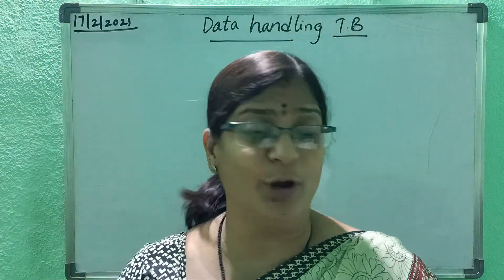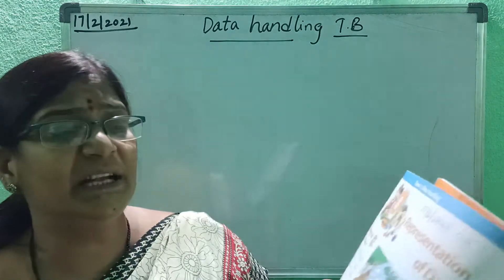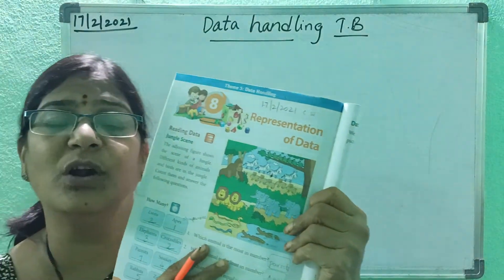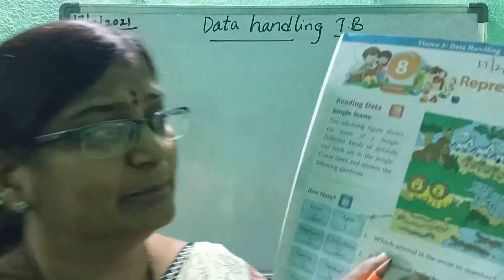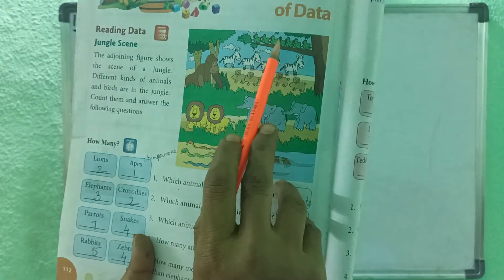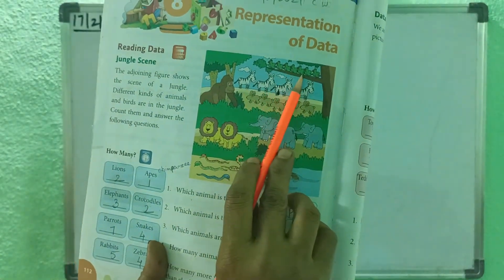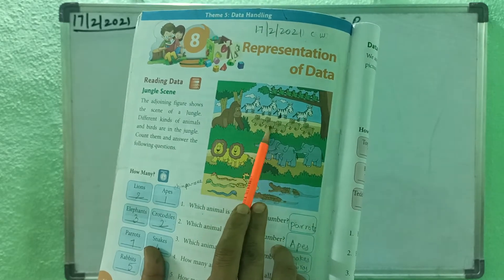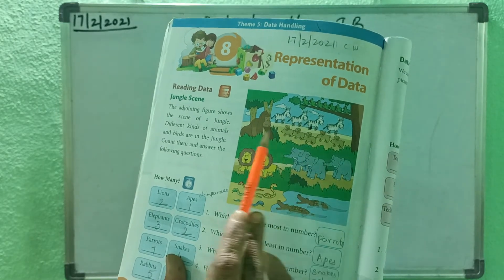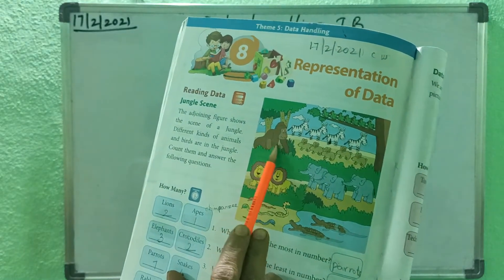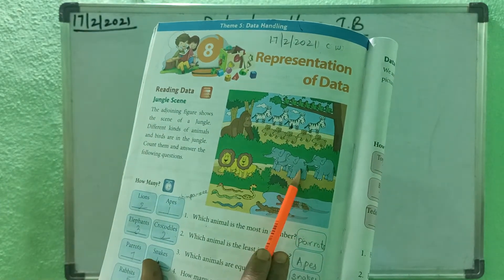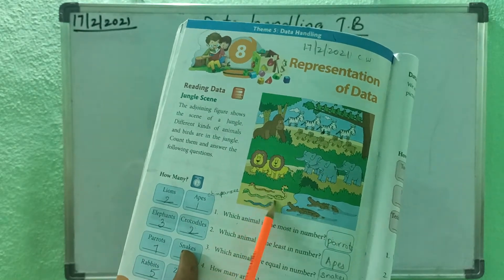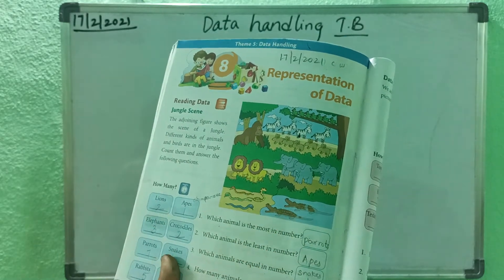Count them and answer the following questions. Now, they have given some pictures of animals here. You have to see and tell me what animals you have. Here you can see parrots, zebras, rabbits, and this is a chimpanzee. Next — elephants, lion — the king of the jungle — snakes, and crocodiles.